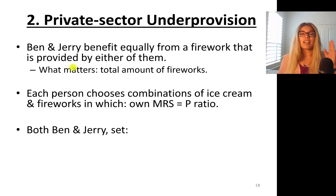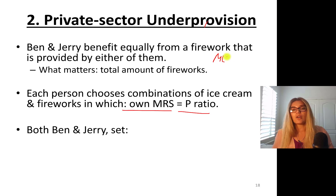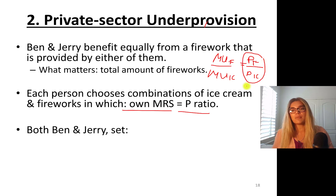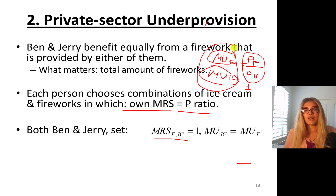Each person will choose combinations of ice cream, a private good, and fireworks such that their marginal rate of substitution equals the price ratio. Marginal rate of substitution is marginal utility of fireworks divided by marginal utility of ice cream, equal to price of fireworks divided by price of ice cream — this comes from chapter 2. We assume the price of both are equal to 1, so 1 divided by 1 is 1. Both Ben and Jerry will equalize the marginal utility from the last ice cream to that of fireworks.